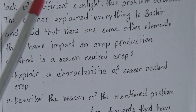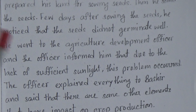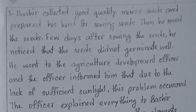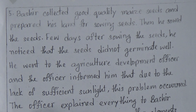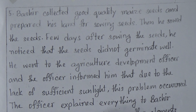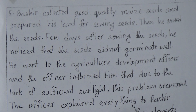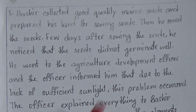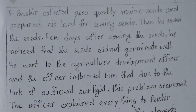Mr. Bashir collected some quality maize seeds and sowed them in the field, but the seeds did not germinate properly because there was a lack of sufficient sunlight. He talked to the agricultural development officer and the officer told Bashir that there are some elements that have impact on crop production. So this is our stem. Now we will read the questions.